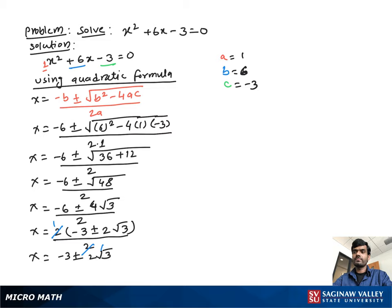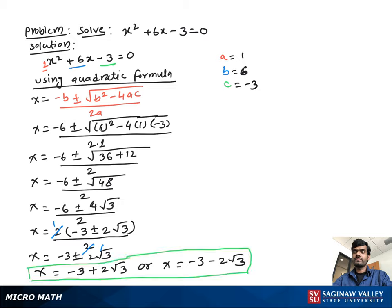Or we can write this into two separate parts: x equals negative 3 plus 2 times square root of 3, or x equals negative 3 minus 2 times square root of 3. And this is our final answer.